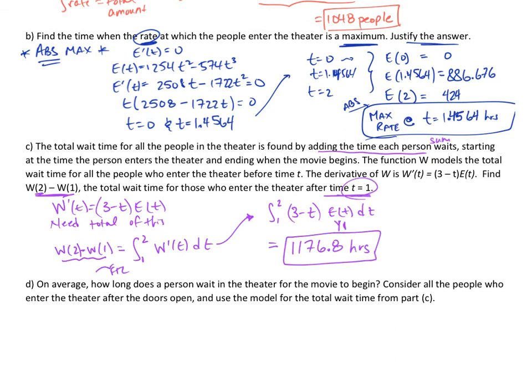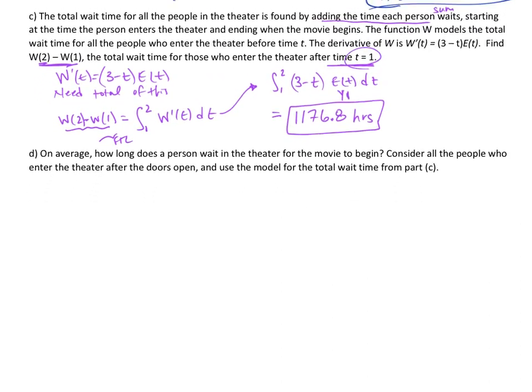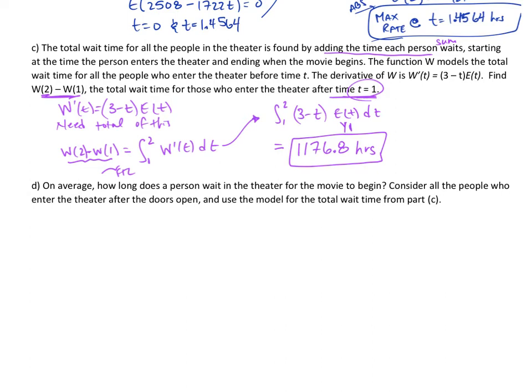Let's move on to part D. It says, on average, how long does a person wait in the theater for the movie to begin? Consider all the people who have entered the theater after the doors open, and use the model for the total wait time from part C. After the doors open means t = 0, and total wait time from part C tells us that we have (3 - t)E(t). On average tells me that I need an average value. We know that it's 1/(b - a) times the integral from a to b of W'(t) dt.